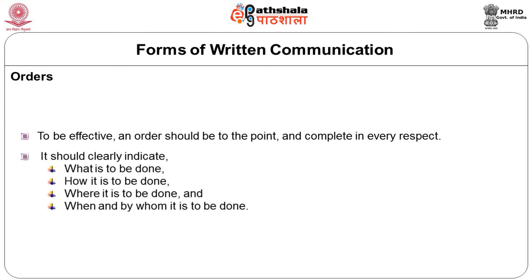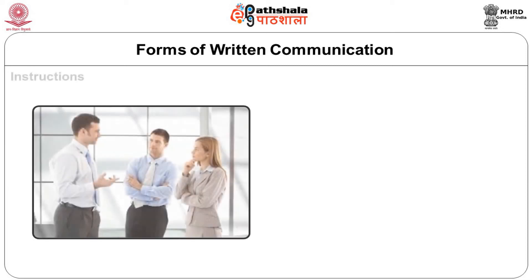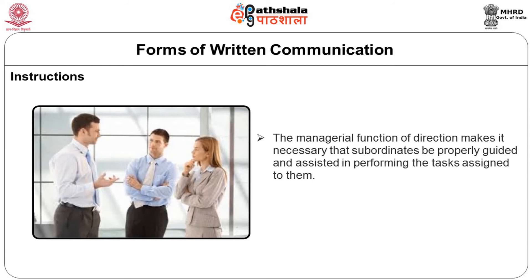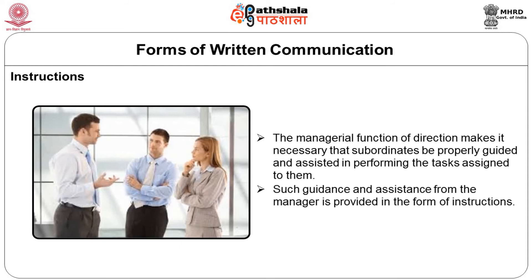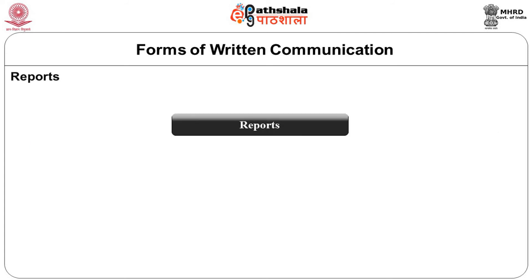To be effective, an order should be to the point and complete in every respect — it should clearly indicate what is to be done, how it is to be done, where it is to be done, and when and by whom it is to be done. The next form is instructions. The managerial function of direction makes it necessary that subordinates be properly guided and assisted in performing their assigned tasks — such guidance and assistance from the manager is provided in the form of instructions.